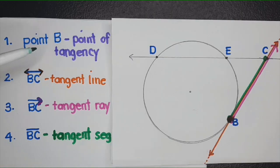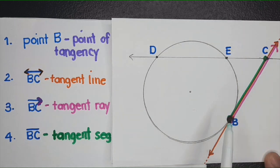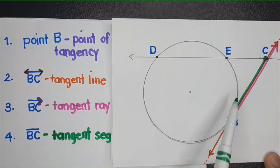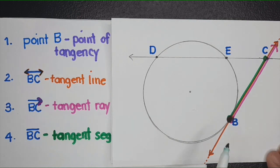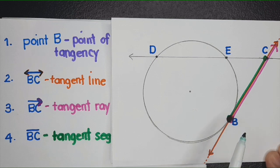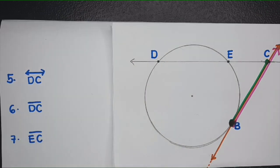They are all related to one another. The tangent line — the color orange — contains the tangent ray in pink, and it also contains the tangent segment in green. And of course, the tangent line contains the point of tangency.